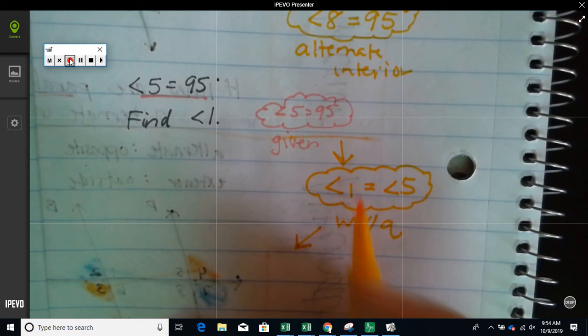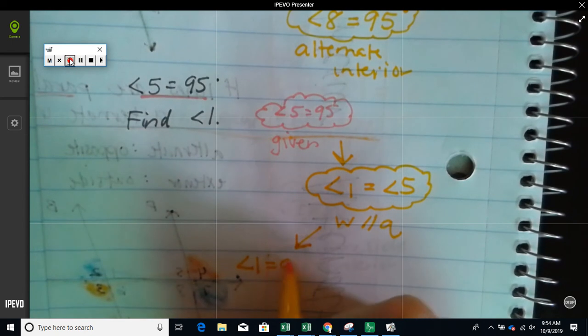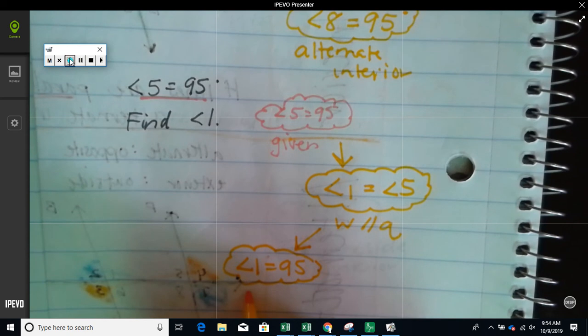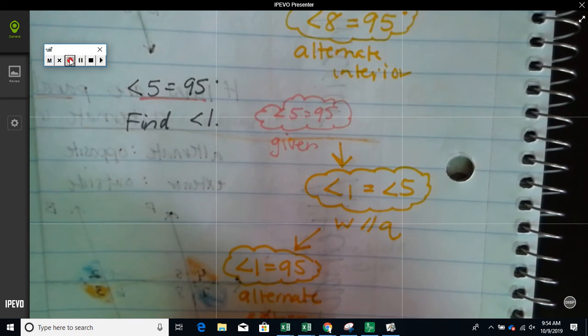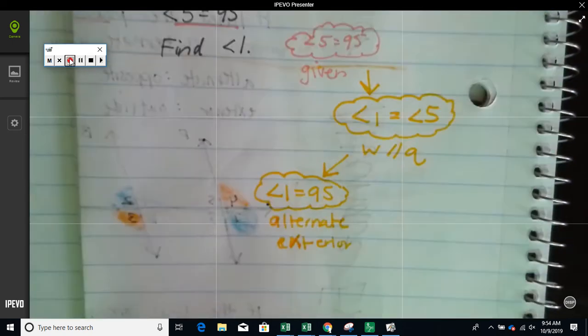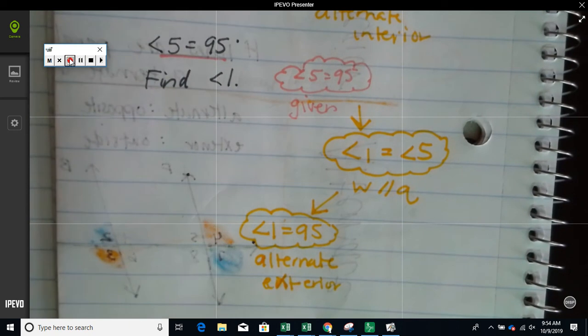So, because they're the same, angle 1 is also equal to 95. And then, I would write that they're why: because they're alternate exterior. And they're only equal because the lines are parallel. That's why. The lines are parallel, that means that they're equal to each other.